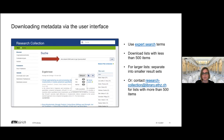If you need an export of metadata that includes more than 500 items, you can either separate your search requests into smaller results sets, or you can contact us via our email address. Our staff at ETH Library has admin rights in the research collection and can download larger results sets for you and send them to you via email.